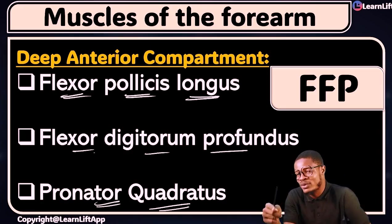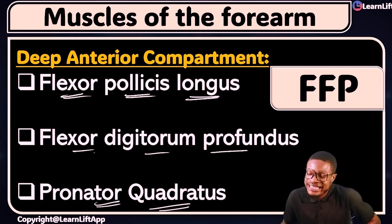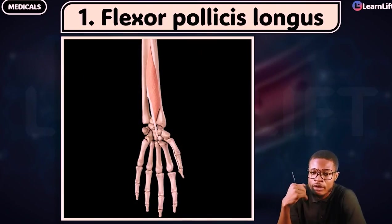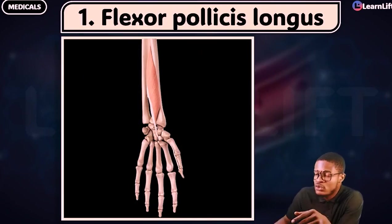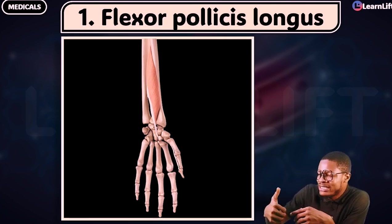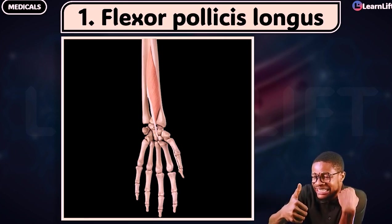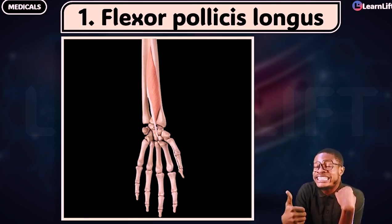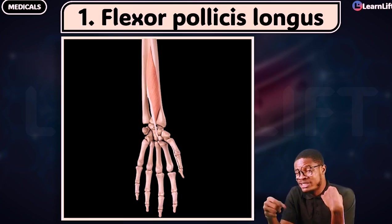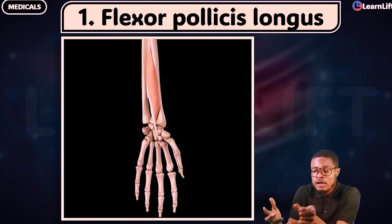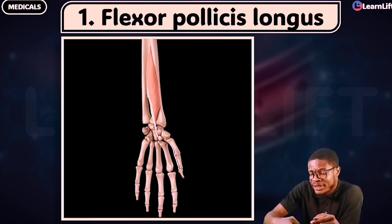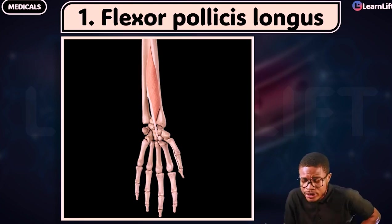Let me explain them one by one. The first is the flexor pollicis longus. From the name: 'flexor' means it flexes; 'pollicis' is the Greek word for thumb; and 'longus' means it is long. So it is a long muscle that goes and helps to flex the thumb — that's why we call it the flexor pollicis longus.